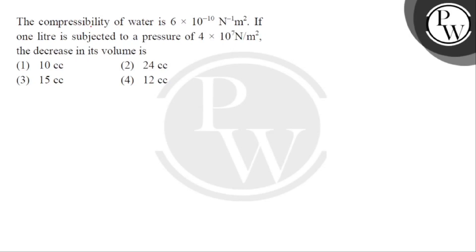Hello, let's read the question. The compressibility of water is 6 × 10^-10 per newton meter square. If 1 liter is subjected to a pressure of 4 × 10^7 newton per meter square, the decrease in its volume is?